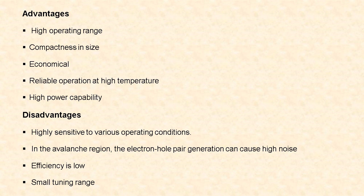Next let us see the disadvantages of the IMPATT diode. This IMPATT diode is highly sensitive to various operating conditions. In the avalanche region, electron-hole pair generation can cause high noise. The efficiency of the IMPATT diode is low, approximately 30 percent. It has a small tuning range.